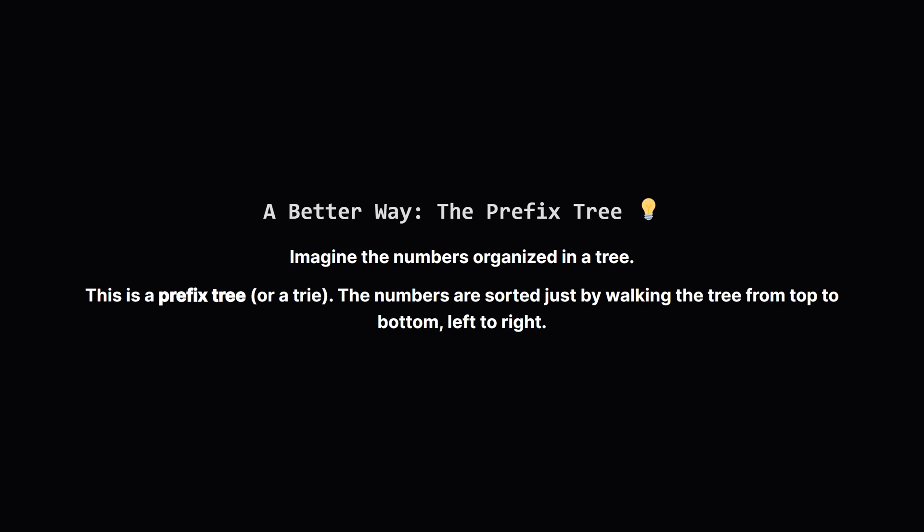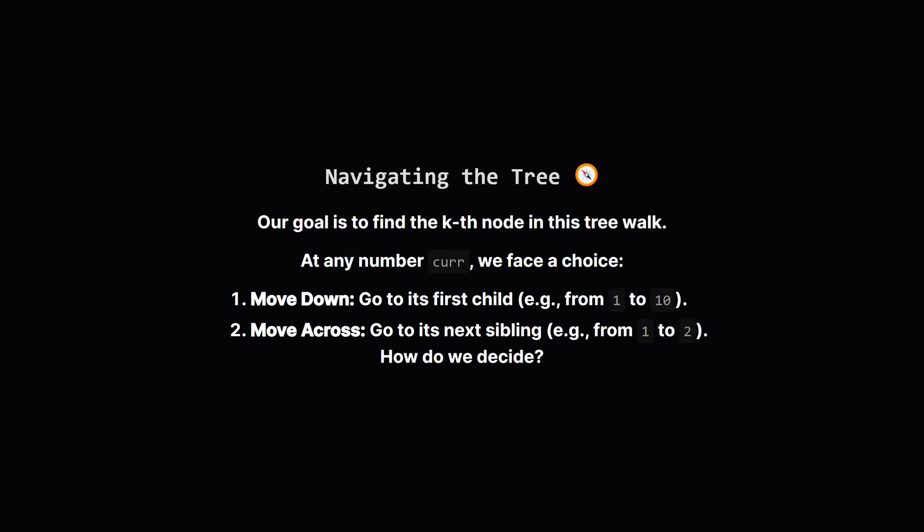This structure is called a prefix tree, and it perfectly matches the lexicographical order. If we walk this tree from top to bottom, and from left to right at each level, we get the exact sorted sequence we need. So our problem now is just navigating this tree to find the k-th smallest position.